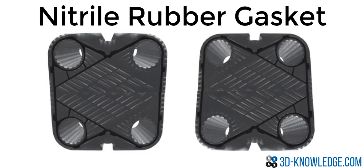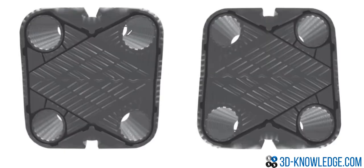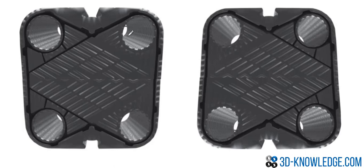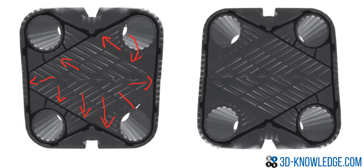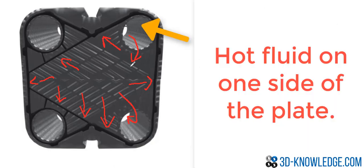Imagine a hot fluid flowing through a plate — it comes in through the inlet and enters the plate space. Each plate is pushed up tight against the next, so the fluid can only flow up to the boundaries of the gasket. Once it occupies the whole space within the gasket area, it exits through the outlet hole. So we have an inlet on the top for the hot fluid and a discharge on the bottom.